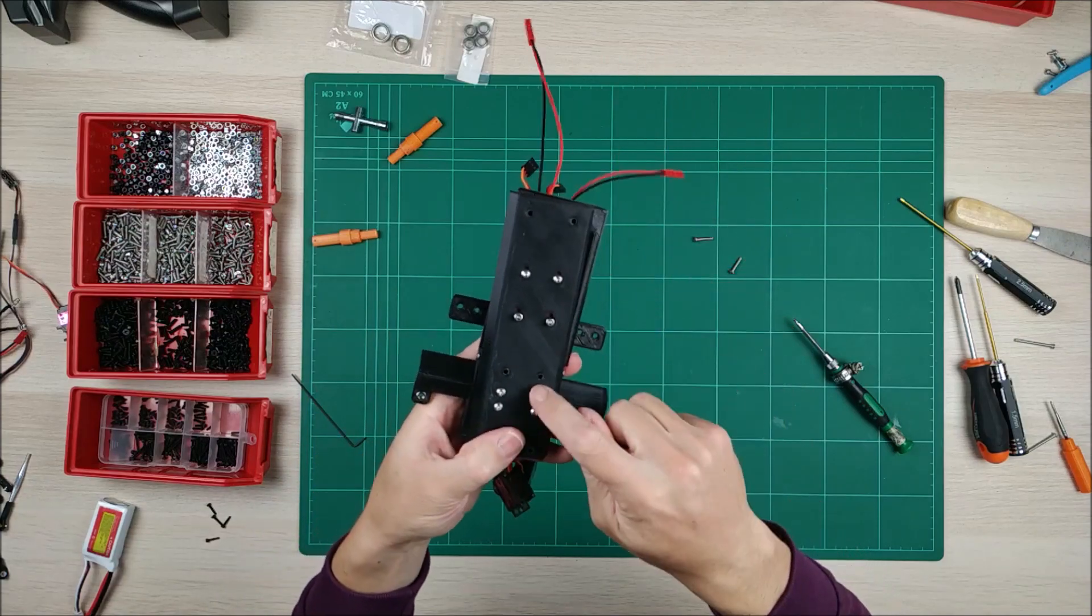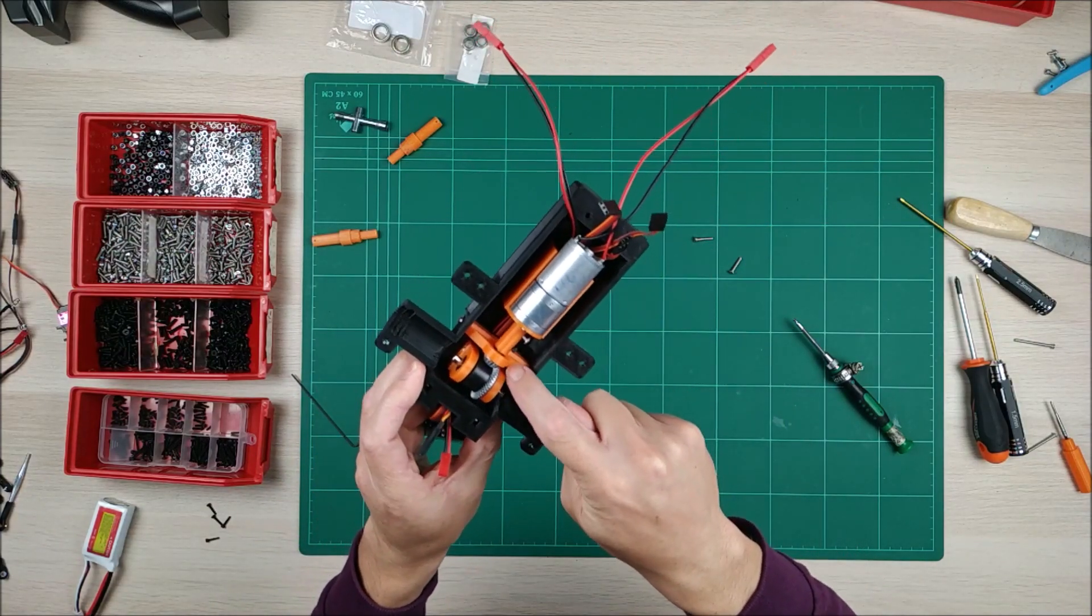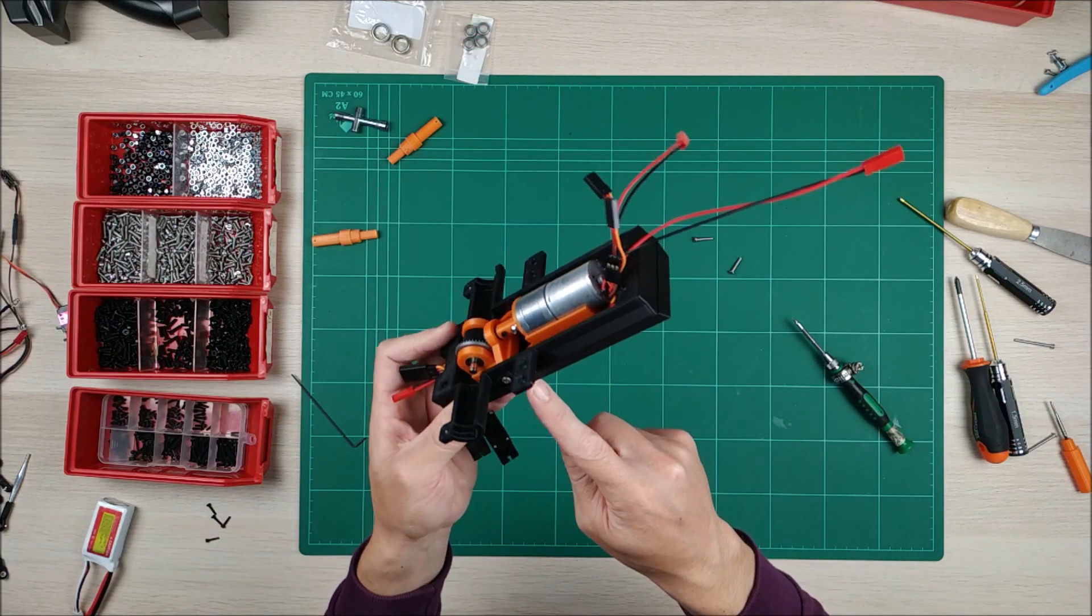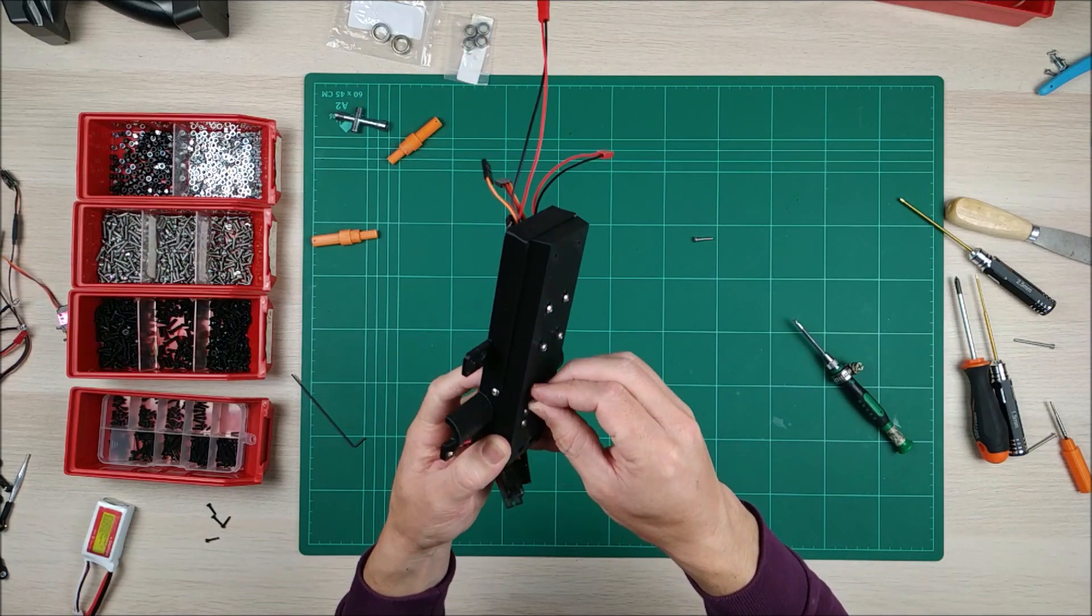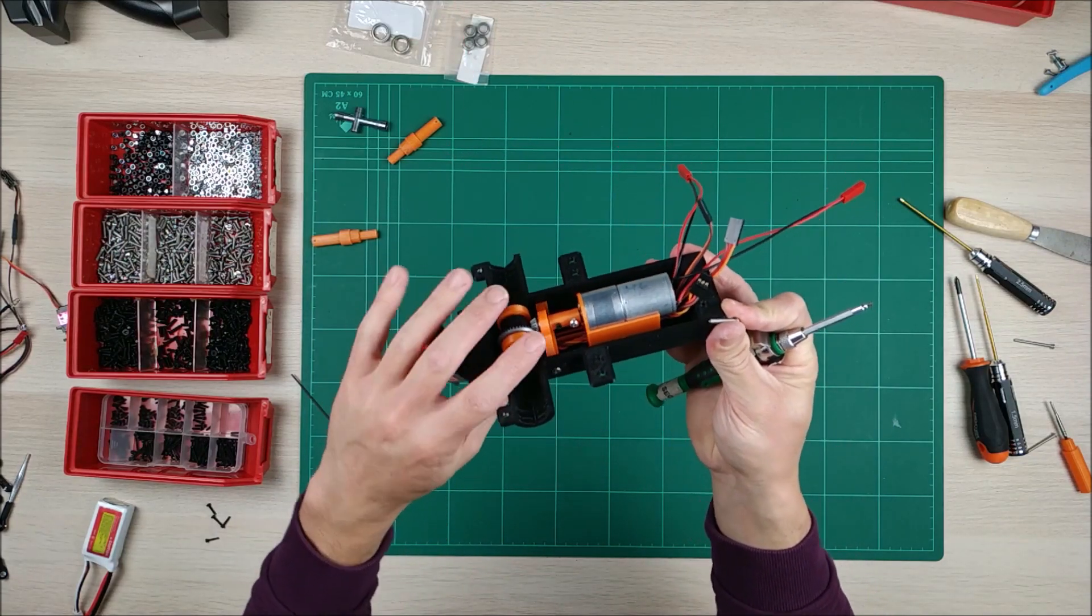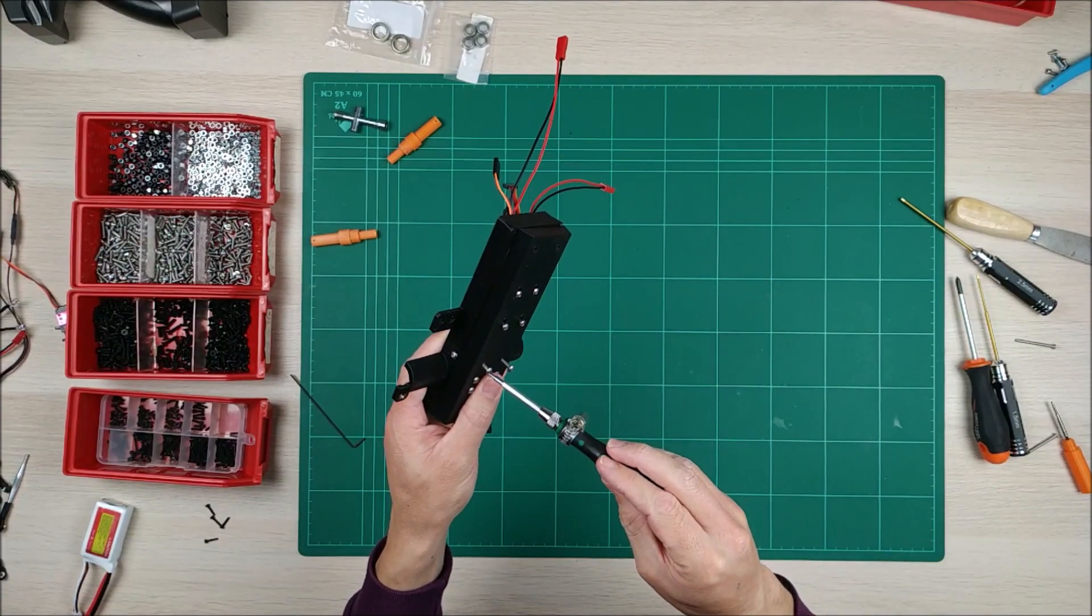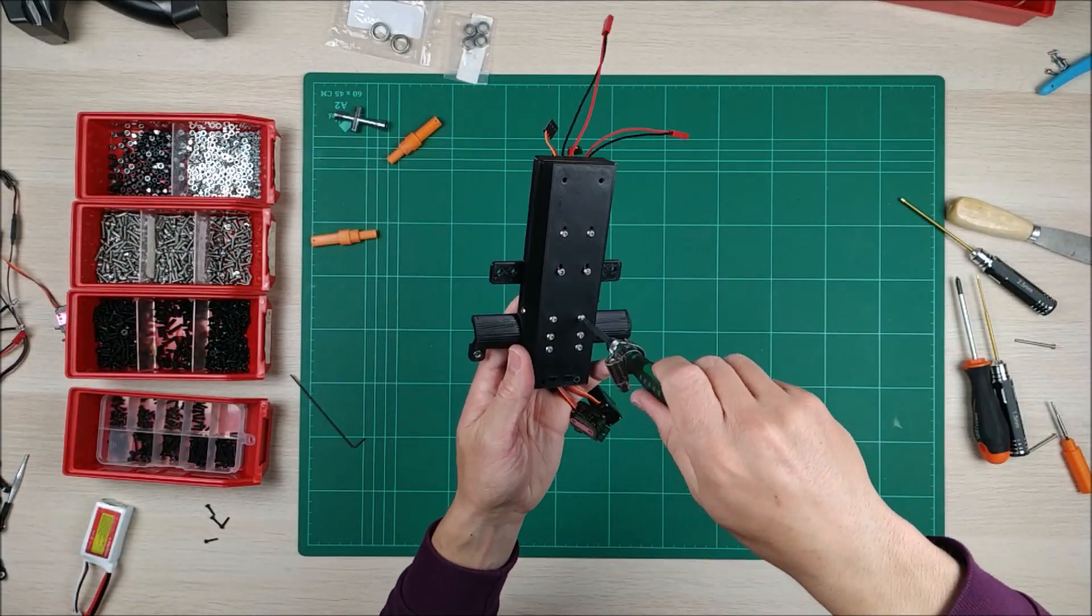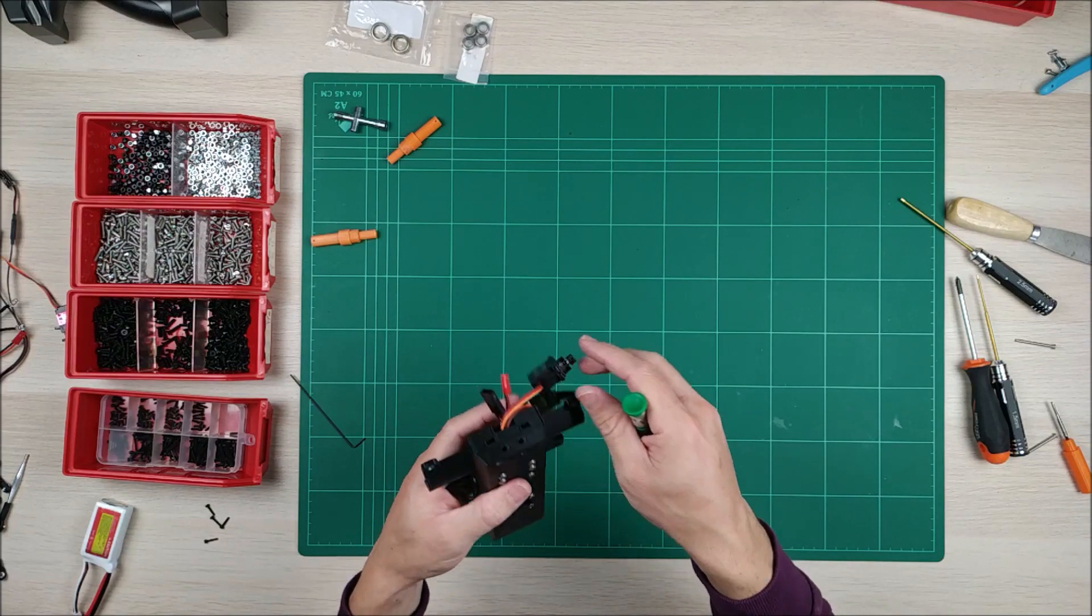Now let's insert these two that go directly tightened to this plastic part. So remember, don't over tighten the screws that go directly to the plastic because you may break the hole. And these are M3 16 millimeters. So let's finish this.